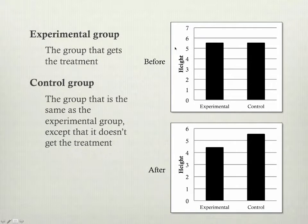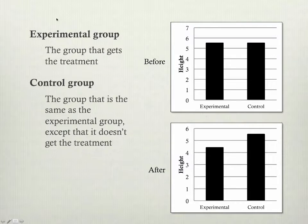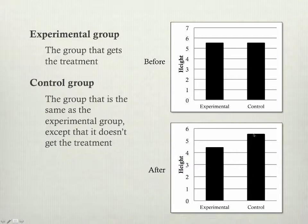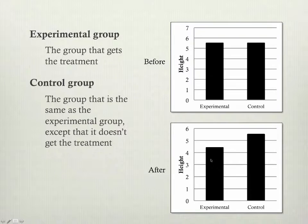So the ideal is we start off with an experimental group and a control group that are exactly the same. Then we give the experimental group the treatment, and that makes it different from the control group, and we know that difference is caused by our independent variable.